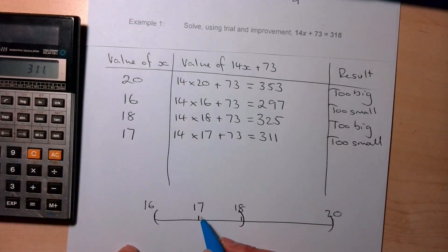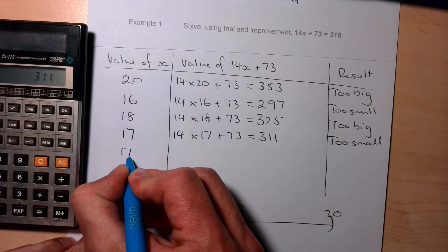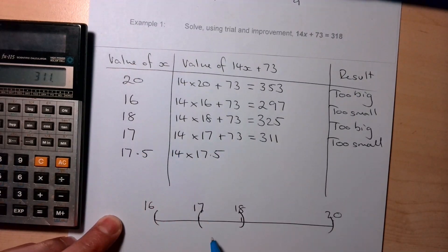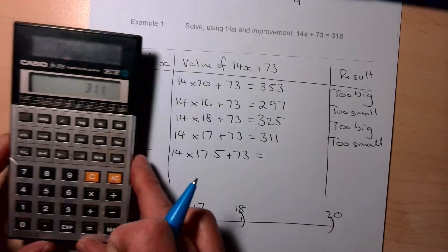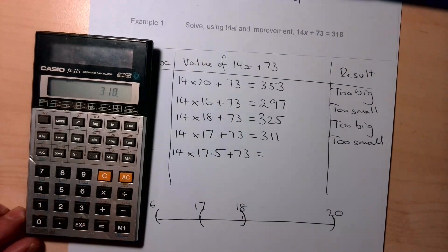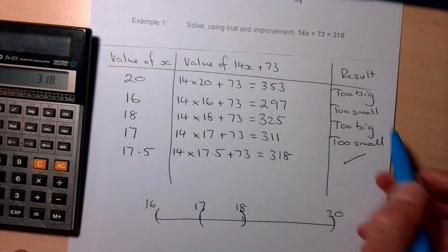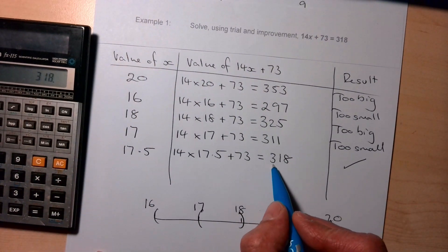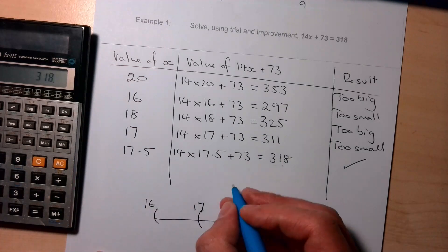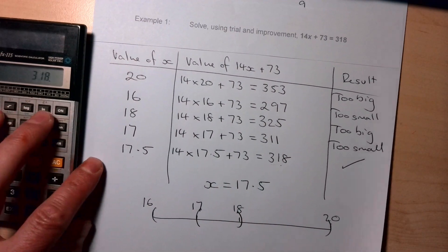So 17 is too small, meaning the answer is between 17 and 18. The number halfway between is 17.5: 14 × 17.5 + 73 = 318. That's exactly correct! Be careful — don't write the expression as your answer. We're finding the value of x, so we write x = 17.5.